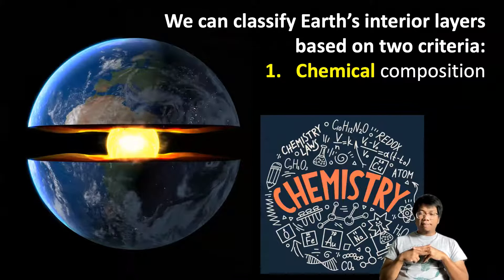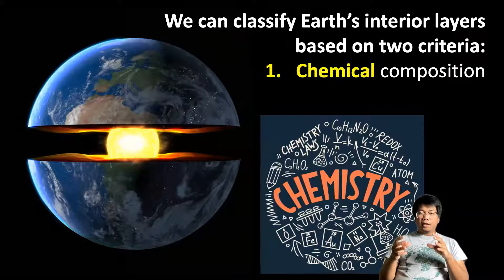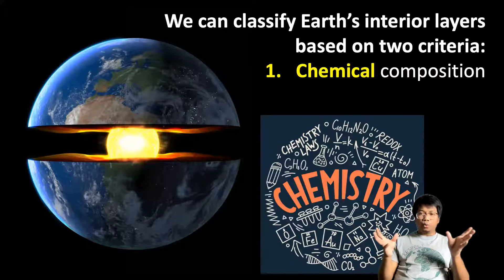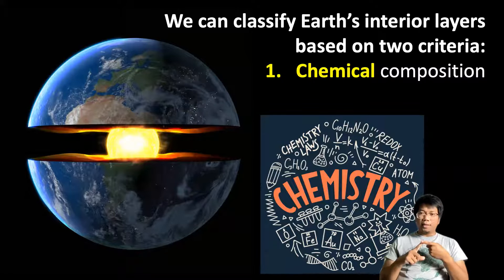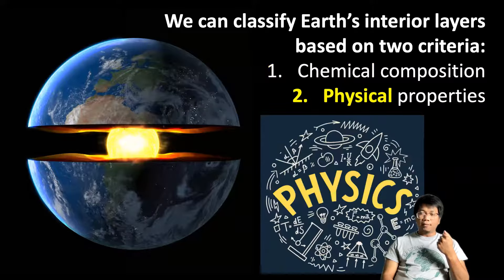In order to answer that, we have to understand that there are two ways to classify the Earth's interior using two criteria. The first one is chemical composition, and the second one is physical properties.